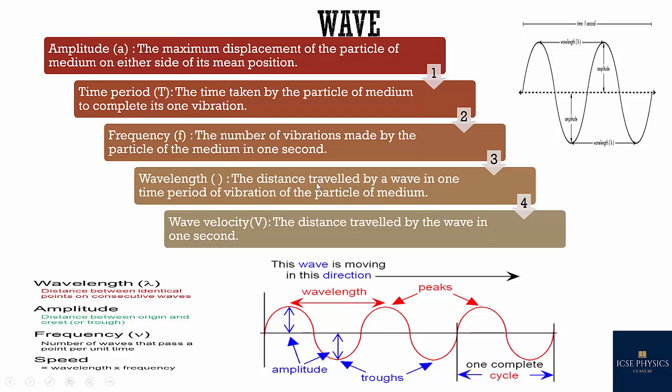Then what is wavelength? The distance traveled by a wave in one time period of vibration of a particle of a medium. The wavelength can also be defined as the distance between two identical points on consecutive waves. This point is known as peak as you can see here. The highest point is peak or crest and lowest point is trough. So distance between two consecutive peaks or crests is also known as wavelength.